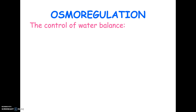Which means if a cell is not in an isotonic environment — an environment that has the same amount of water and similar amounts of solutes — what's going to happen is either water's going to go in and the cell's going to swell, or water's going to go out and the cell's going to shrivel up. So there has to be some way of controlling the balance of water.